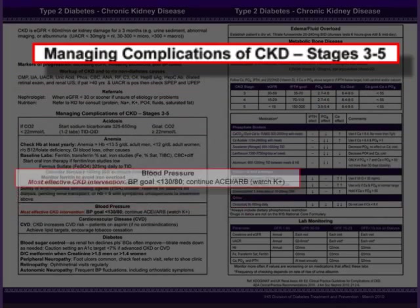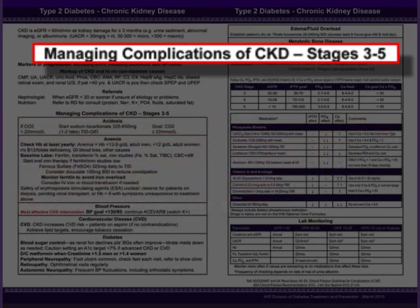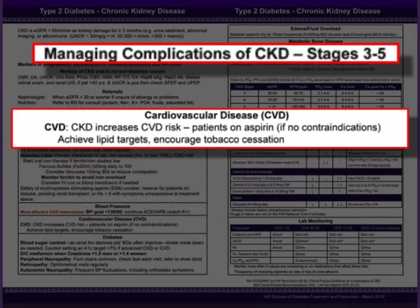We must never forget that the most effective CKD intervention is controlling hypertension. The blood pressure goal continues to be less than 130 over 80. Continue to use ACE inhibitors and angiotensin receptor blockers as indicated, remembering to watch potassium levels as CKD progresses. Just as diabetes increases cardiovascular disease risk, the addition of CKD further increases this risk. We need to be sure that patients are on aspirin therapy if there are no contraindications, and we also need to redouble our efforts to achieve lipid targets and to encourage tobacco cessation when indicated.